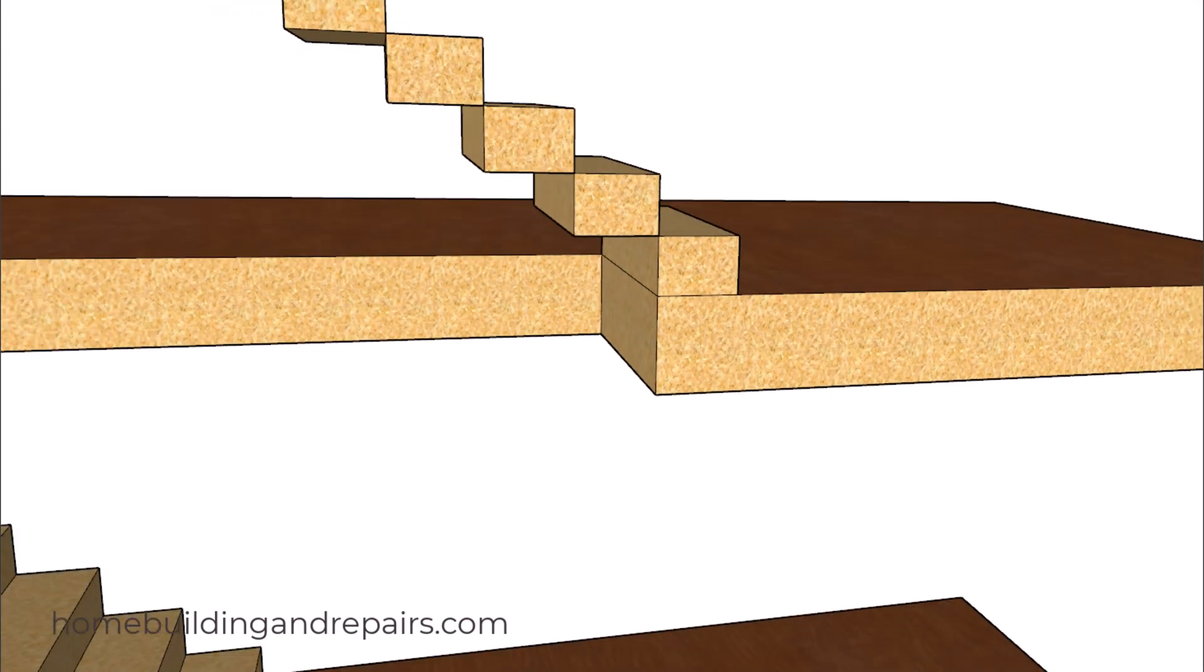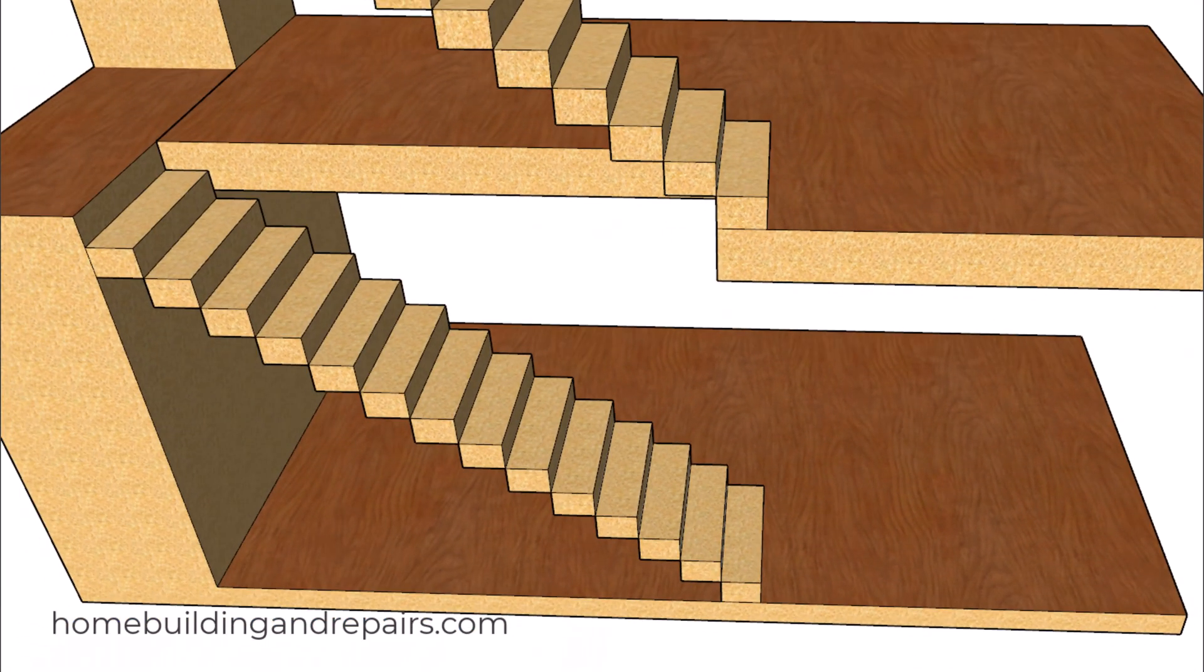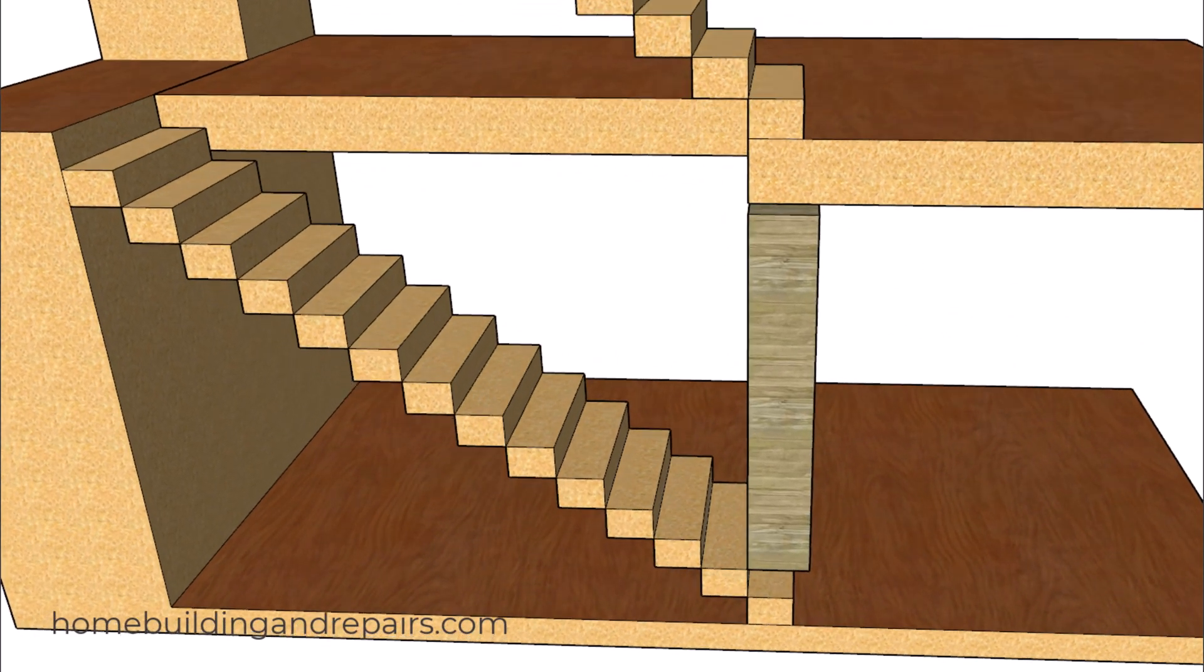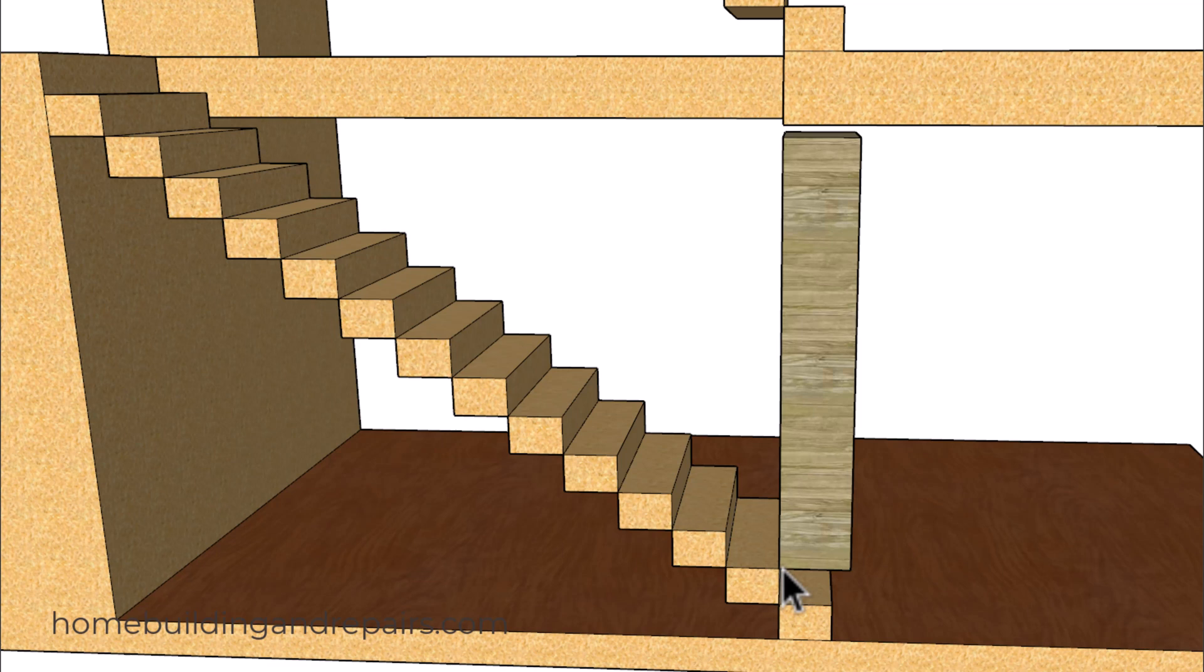For example, if I'm going to have stairs that stack on top of each other and are going to be located in the exact spot on the floor plans as the one directly below it, then you shouldn't have a problem as long as you're going to be using the same tread and riser measurements along with the floor joist and the floor sheathing measurements.